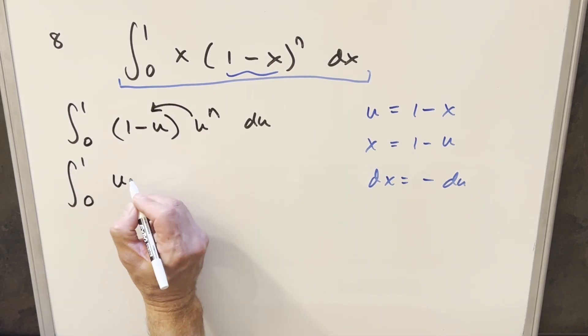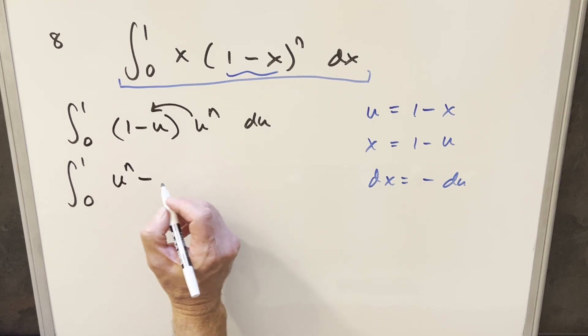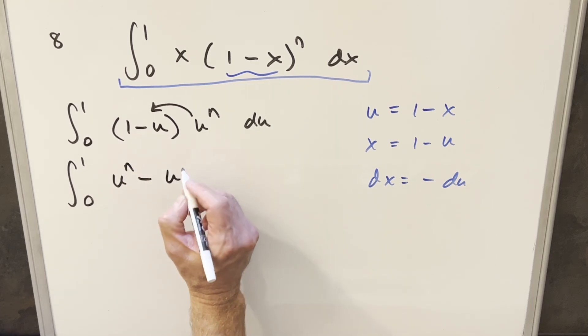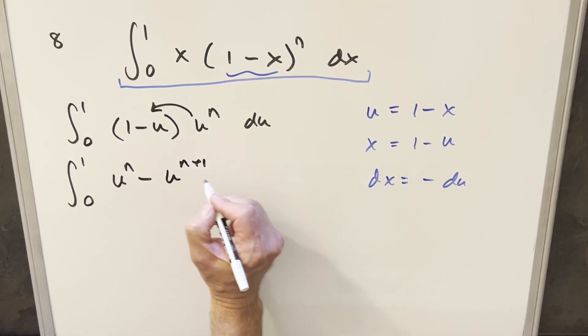And now what that allows us to do is now we can just multiply in the u to the n. So when we do that, this is going to transform into just u to the n minus, multiplying this together, we get u to the n plus 1 du.